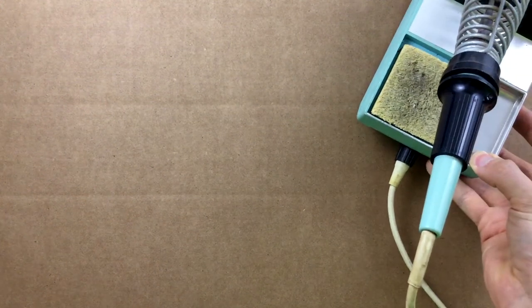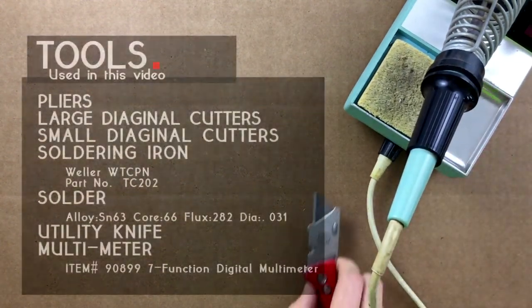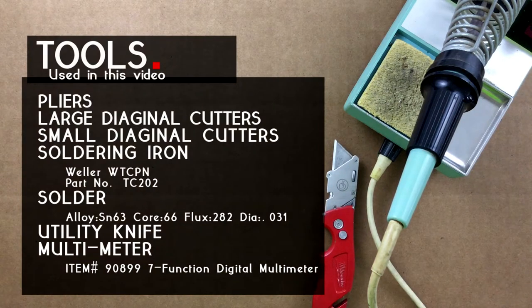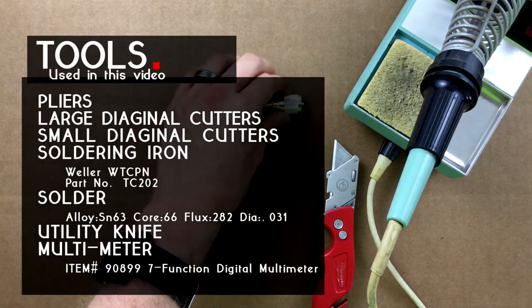Welcome to another Max Gain Systems installation series video. We will be installing a UHF male solder-on connector or PL259 onto LMR400 coax.